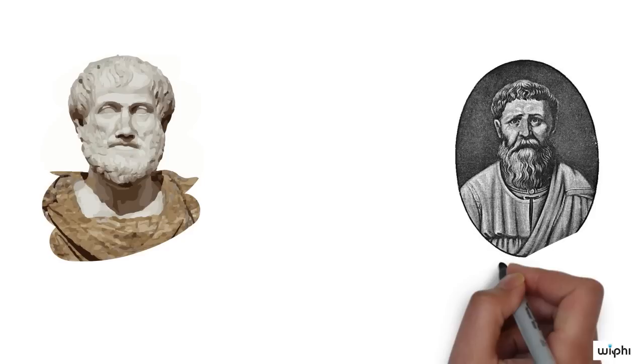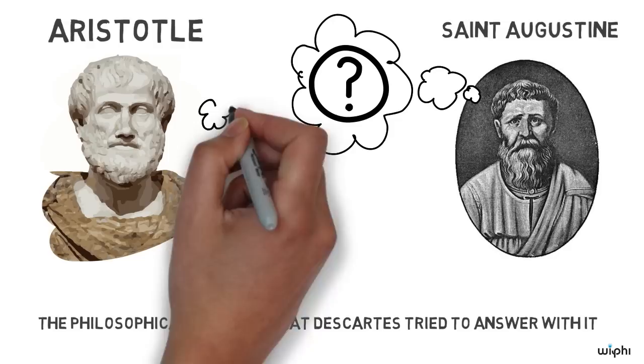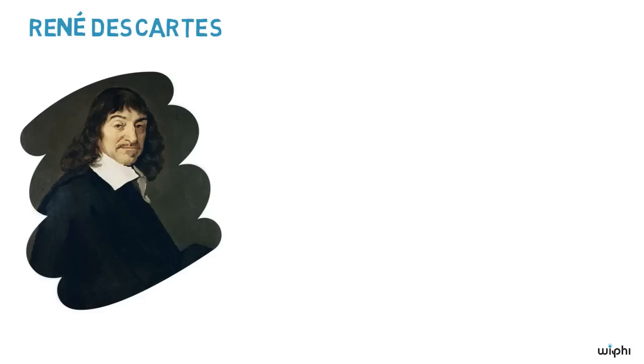The most exciting feature of Descartes' Cogito argument is not the argument itself, though. It can actually already be found in Aristotle and St. Augustine. It is rather the philosophical question that Descartes tried to answer with it. But who was this guy Descartes anyway? And what is this question that the Cogito argument is supposed to answer?